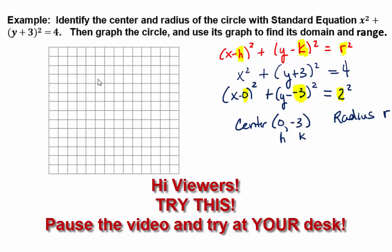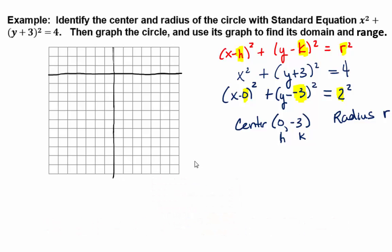All right, so now at your desk, I'd like you to graph the circle. Remember to label your center and your north, south, east, west points. Okay, let's take a look together. So your center is at (0, -3), and then we have a radius of 2. So I'm going to go up 2 from there, the north point.